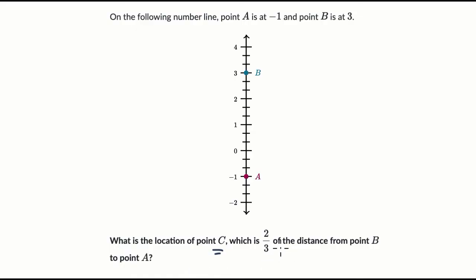So if we're going two-thirds of the distance from point B to point A, we're going to start at point B, and if we went all the distance to point A, we would go all of that way. But we don't want to go the whole distance, we want to go two-thirds of this distance. But to figure out how far we should go, we first have to figure out what this distance is going to be.